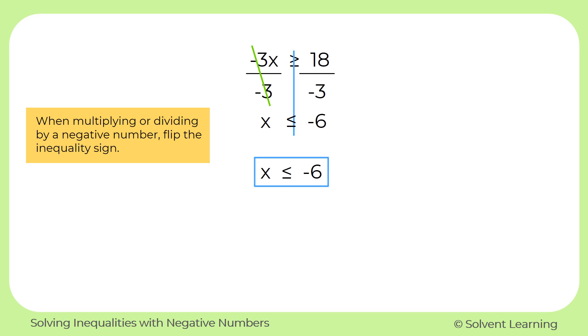Now we can see what our solution will look like on a number line. Since x is less than or equal to negative 6, that means we'll need a closed circle at negative 6 to show that it's included as one of our answers. And then we'll shade everything to the left to represent all of the values that are less than negative 6.